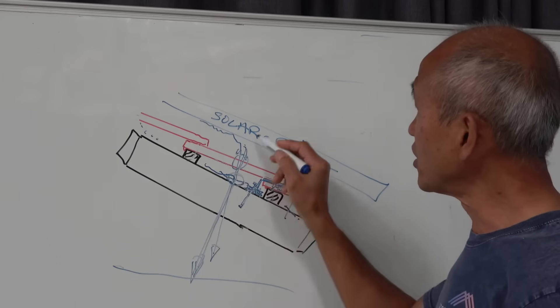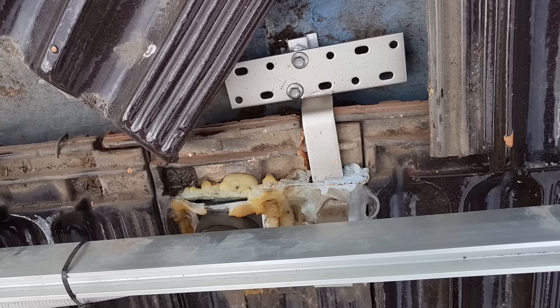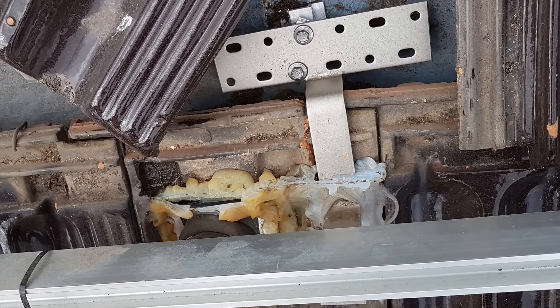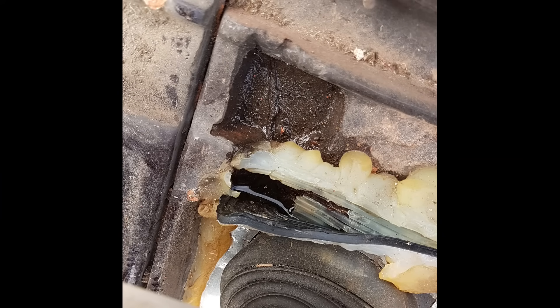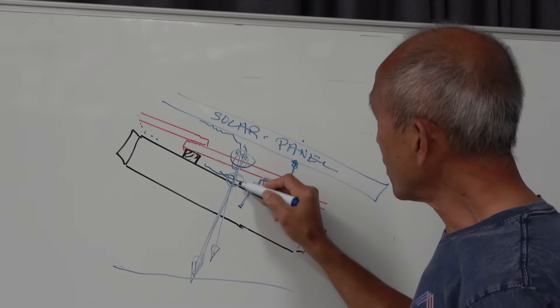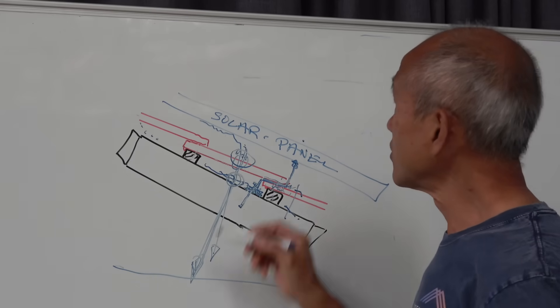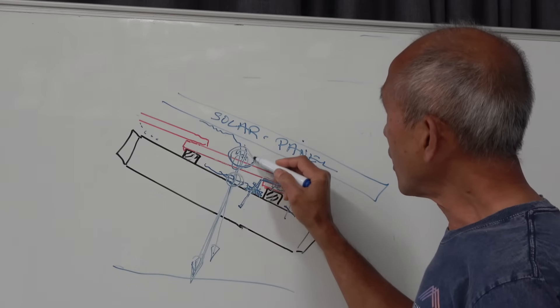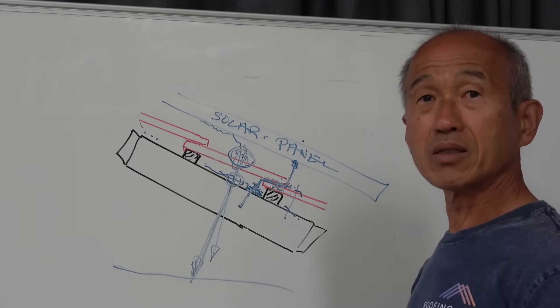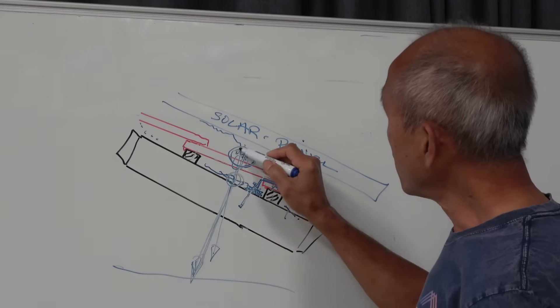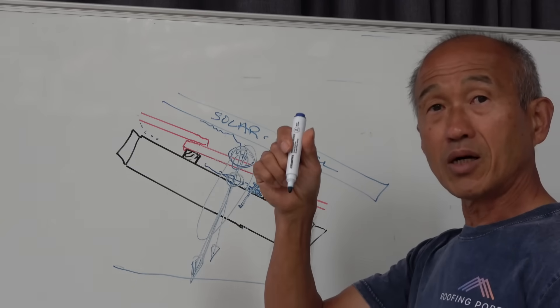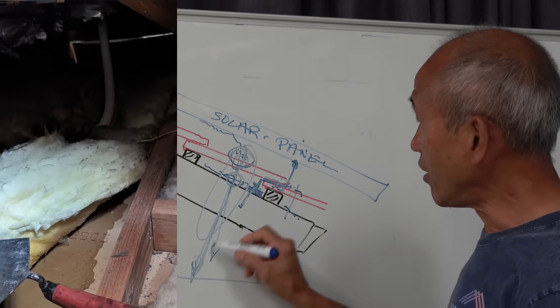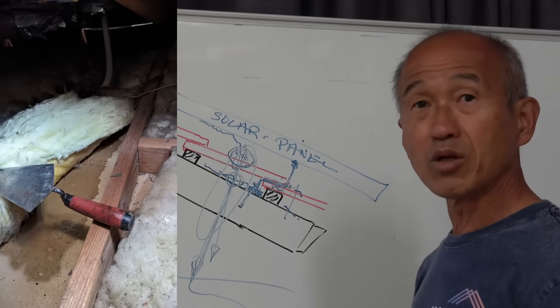The other problem with this conduit is that if that connection is not detailed properly, that can cause a leak. So long term from a maintenance point of view, what we found is the hole in the sarking is one, and how that is flashed to the tile is the second one. So these are the two problems with the conduit that run through the tile and into the cavity area before it gets wired into the panel.